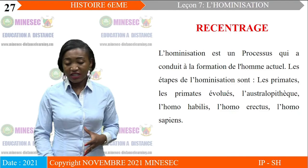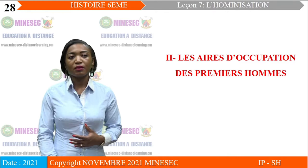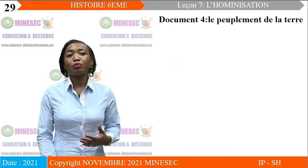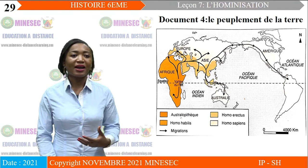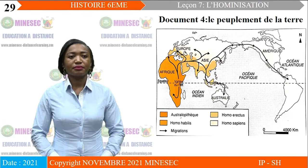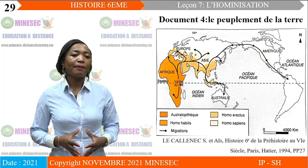Nous allons à présent passer à la deuxième séquence de notre unité d'apprentissage portant sur les aires d'occupation des premiers hommes. Pour égayer cette séquence d'apprentissage, nous allons nous appuyer sur le document carte intitulé « Le peuplement de la terre ». Ce document a pour source : Histoire 6e de la Préhistoire au 6e siècle, Paris, 1994, page 27.